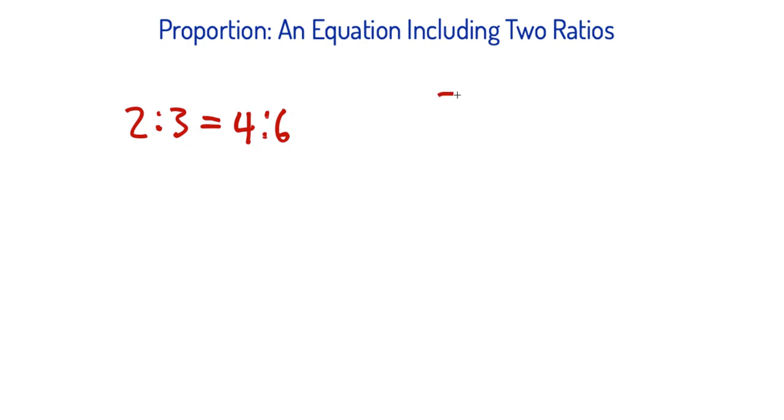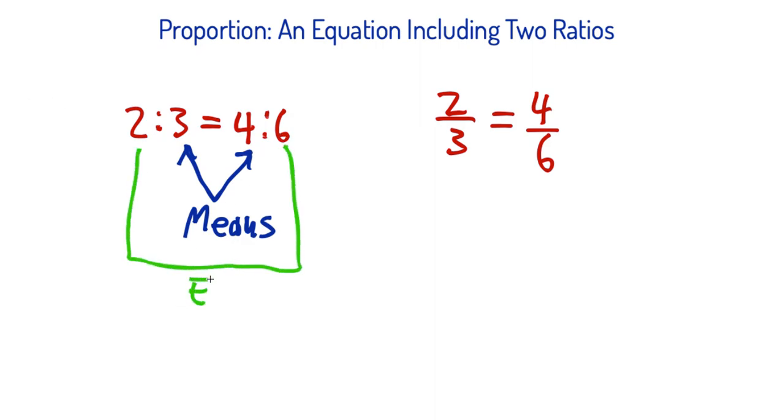Another way of writing it is probably the preferred method is fractions, like two to three equals four to six. Now there's some other terms you'd probably want to know in here. They call the two middle numbers here, like the three and the four in this example to the left, they would be called the means. And then the numbers on the outside, the two and the six, are extremes.